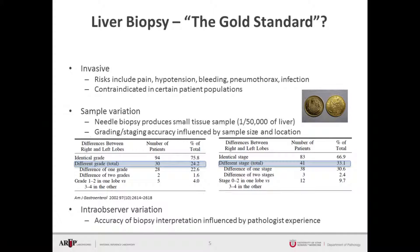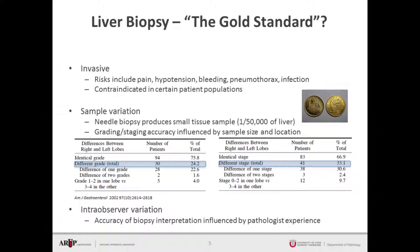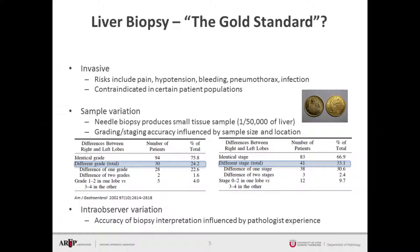Risks include pain, hypertension, bleeding, pneumothorax, and infection, and it is certainly contraindicated in certain populations. Another issue is that the needle biopsy only obtains a very small tissue sample, and the degree of fibrosis observed within the liver may not be the same throughout. Therefore, by taking such a small sample, you may inaccurately determine the stage of fibrosis. Studies also suggest that depending on which lobe is used for the biopsy, the stage of fibrosis may be misclassified because it can differ between the two lobes.